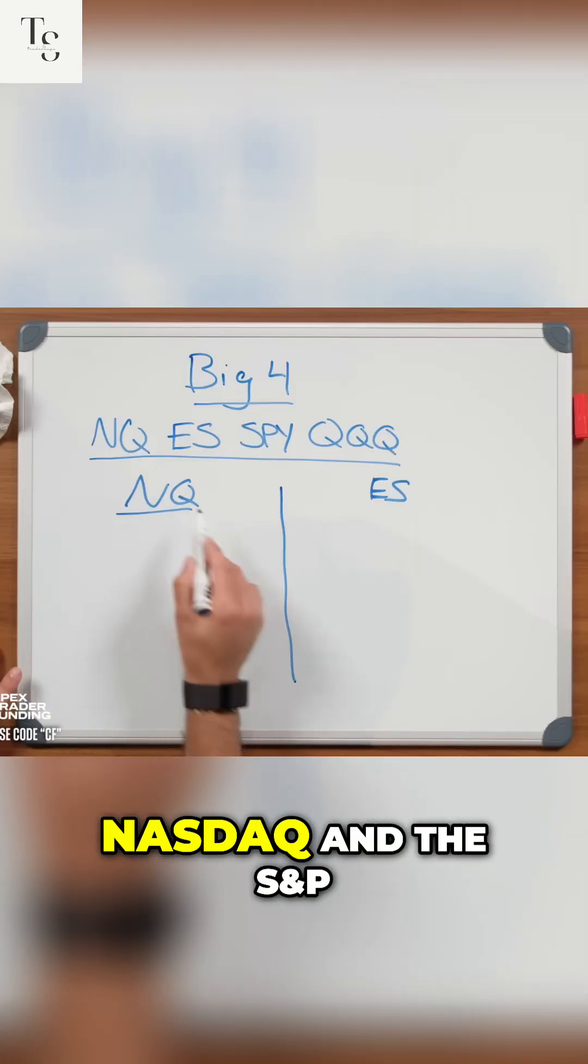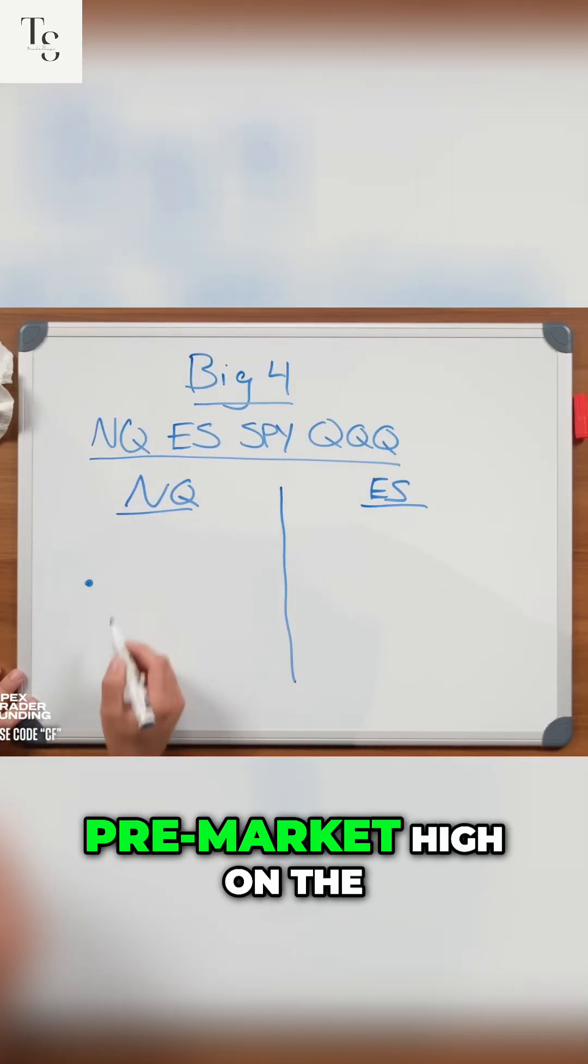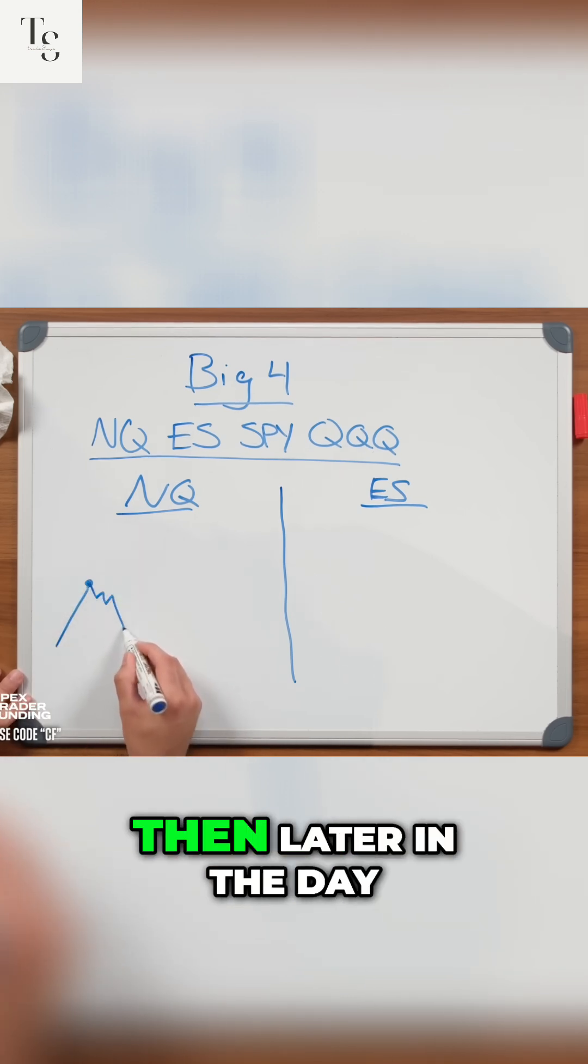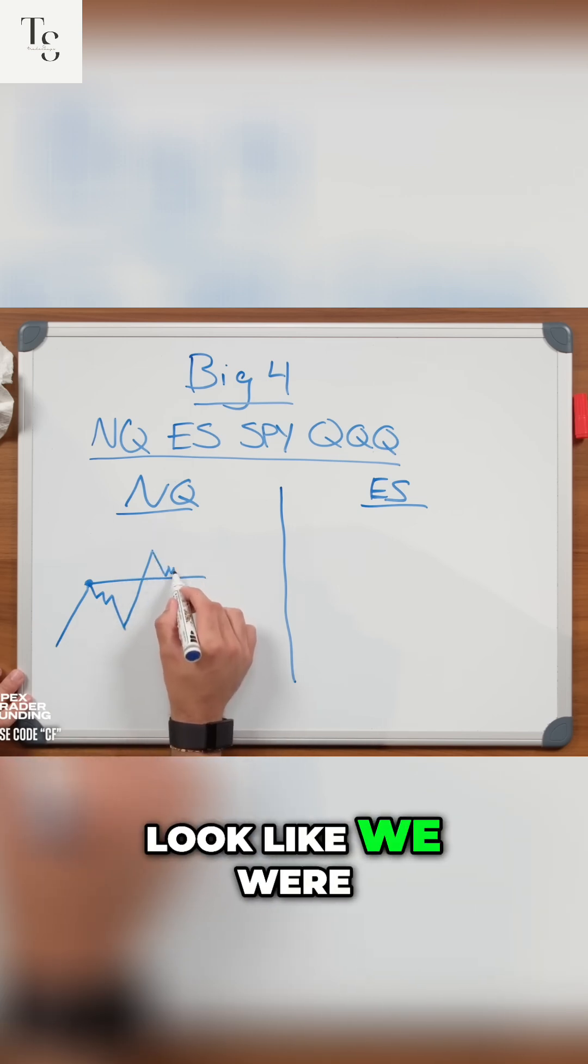We have the NASDAQ and S&P 500 futures. We had a pre-market high on the NASDAQ futures right here. We moved lower, and then later in the day, we broke above that high and started to look like we were holding above it.